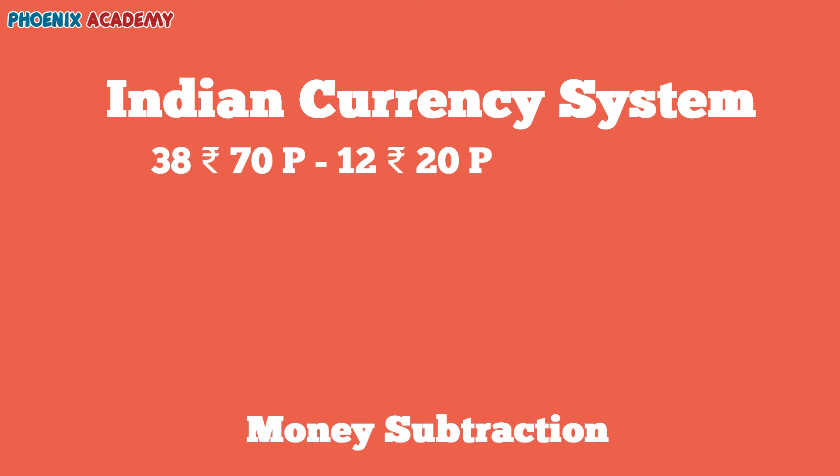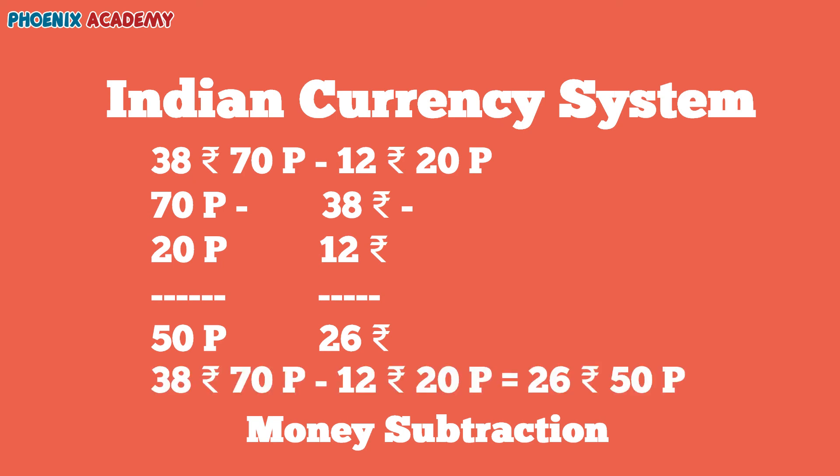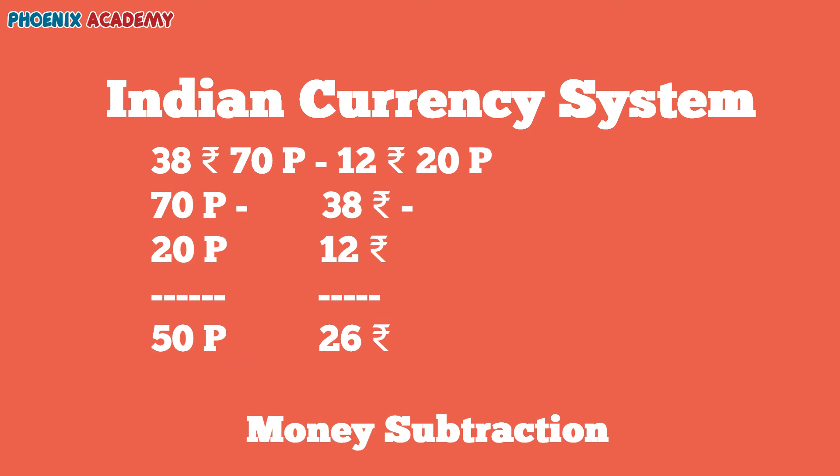Let's subtract 12 rupees 20 paise from 38 rupees 70 paise. Let's begin with the paise subtraction: 70 minus 20, we will get 50. Then do 38 minus 12: 8 minus 2 is 6, 3 minus 1 is 2, we will get 26. So the difference is 26 rupees 50 paise.